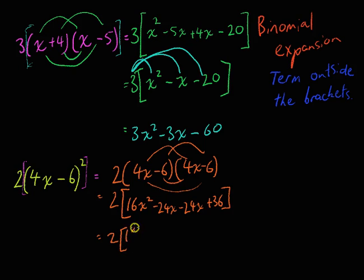Equals, you can simplify this a little bit. Negative 24x, negative 24x, that's negative 48x, positive 36.